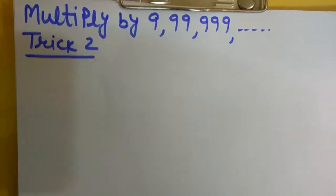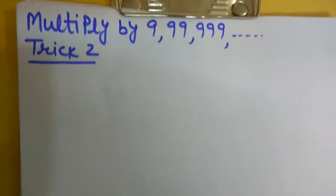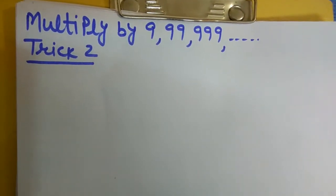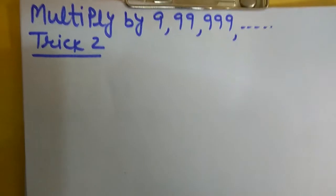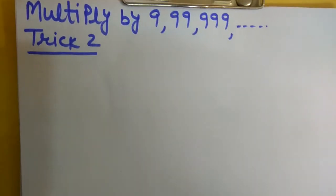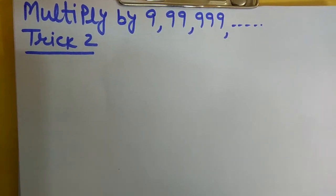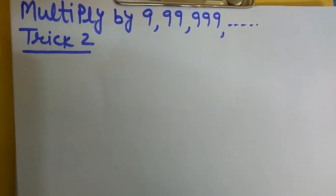Hello friends, today we can again do multiply by nine, double nine, triple nine, and so on. This is a second trick. The first trick you can see on the last episode.